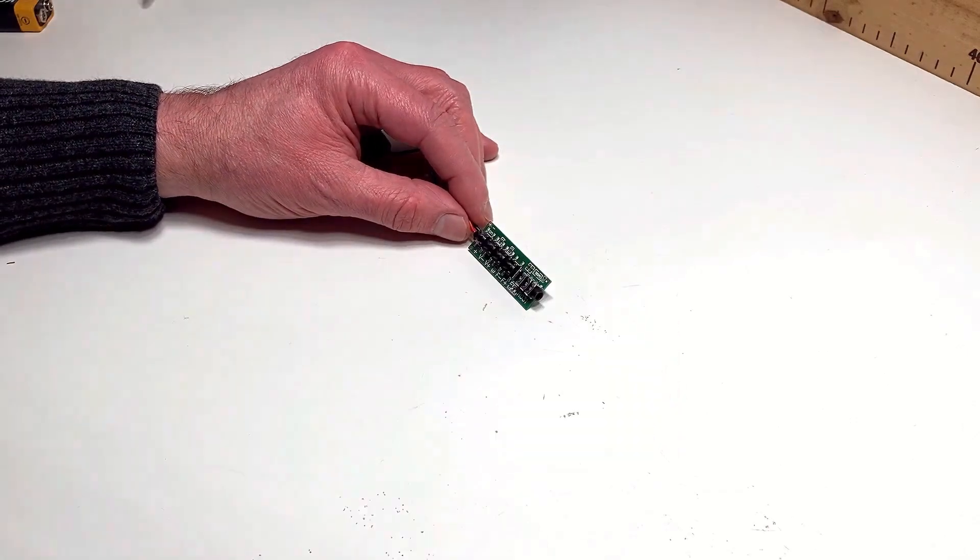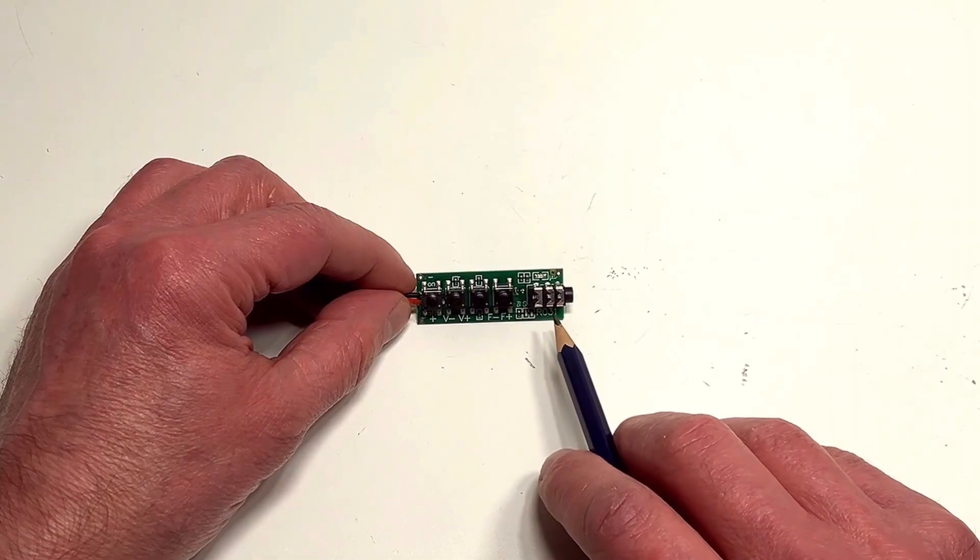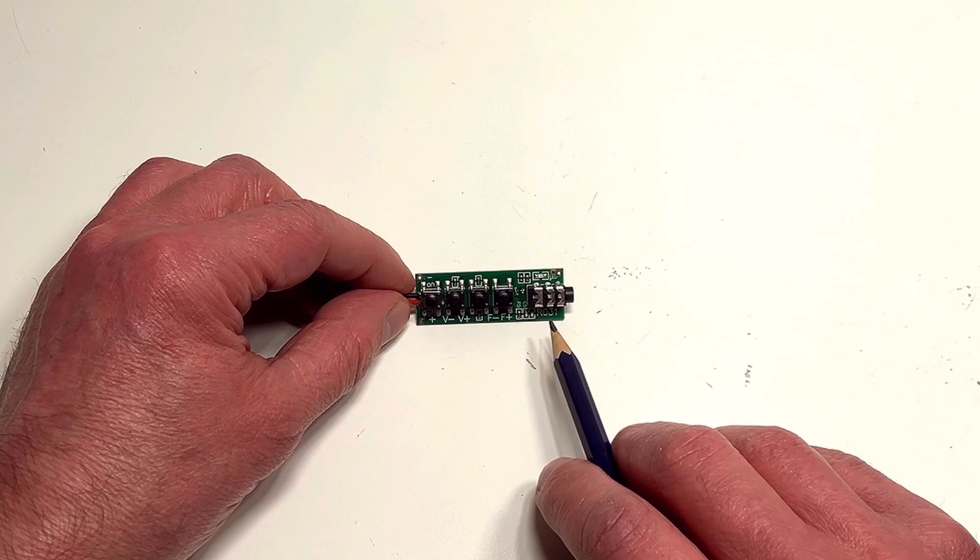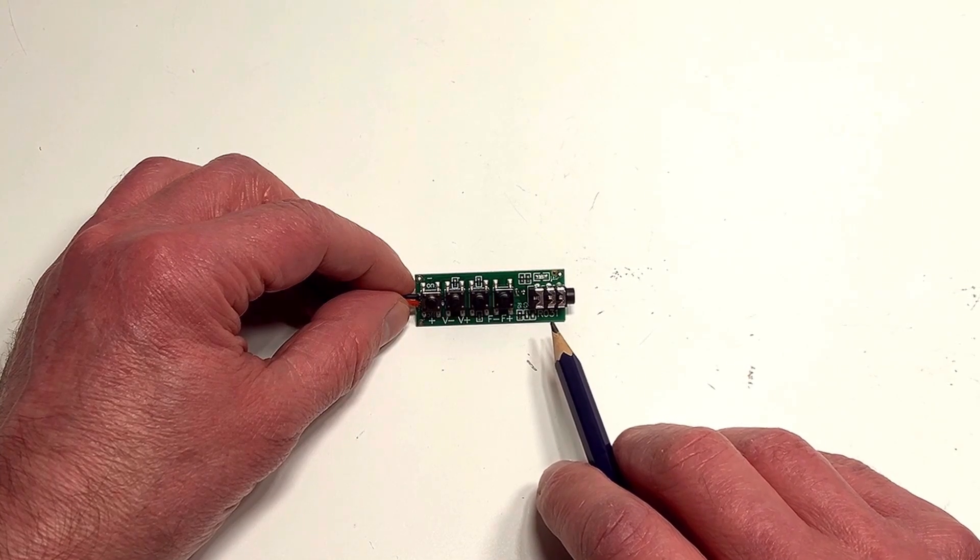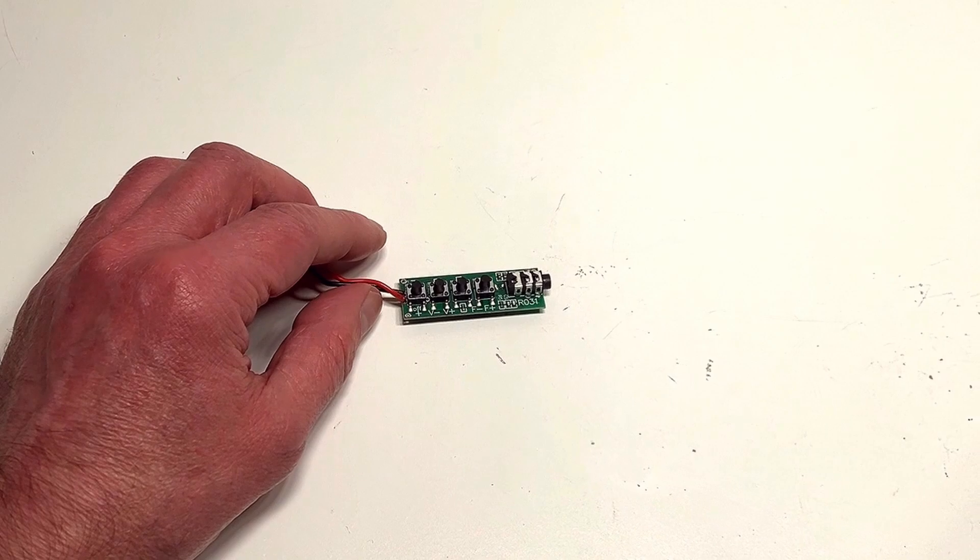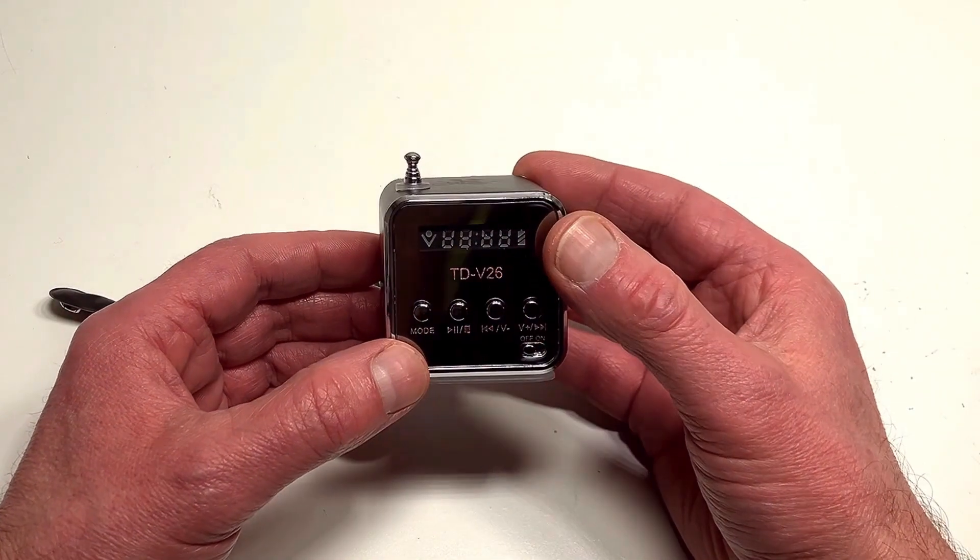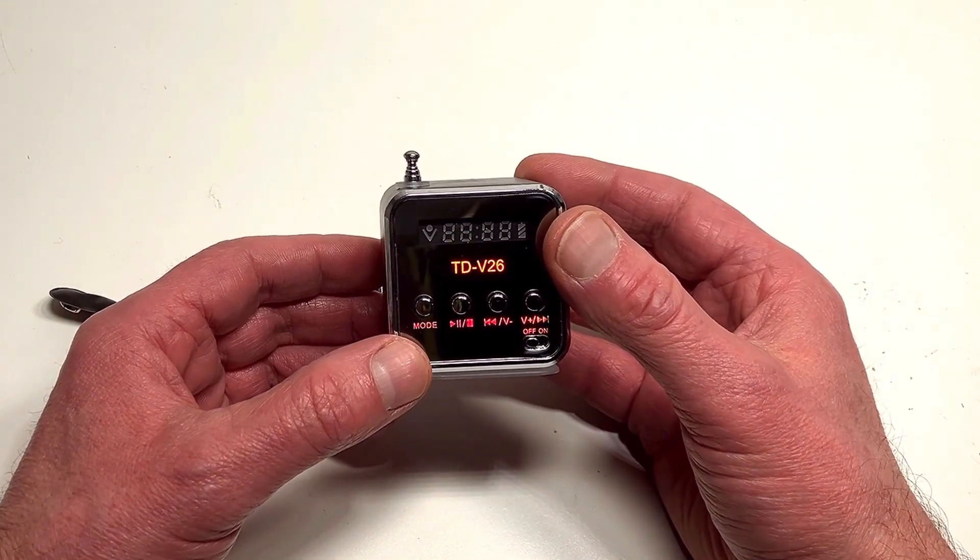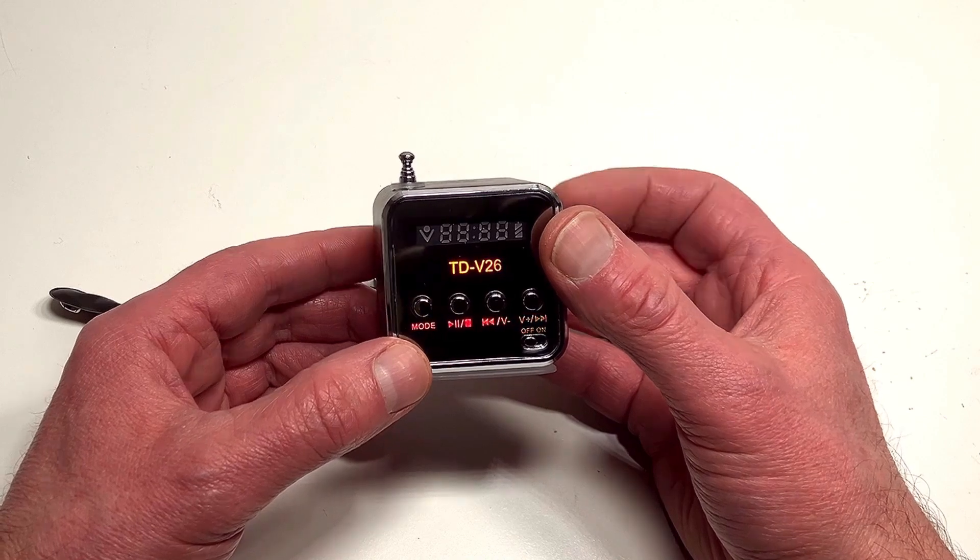Now since this little module employs a 3.5mm jack for the audio output. What I'm going to do is utilize a little amplifier. So you can actually hear what we pick up. And the amplifier we're going to use is this. This is the TDV26. This is an excellent little media player and FM radio.